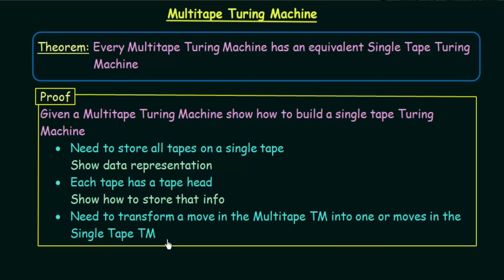The last step says we need to transform a move in the multi-tape Turing machine into one or more moves in the single-tape Turing machine. In a multi-tape Turing machine, the tape heads all have different moves — the first may move left, the second in another direction, and so on. We have to represent those moves on our single tape.